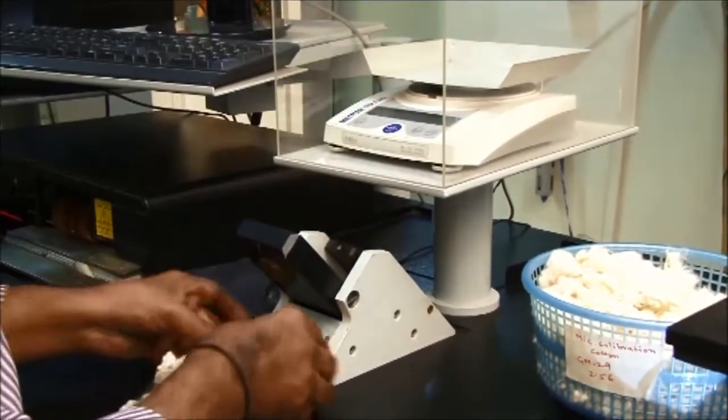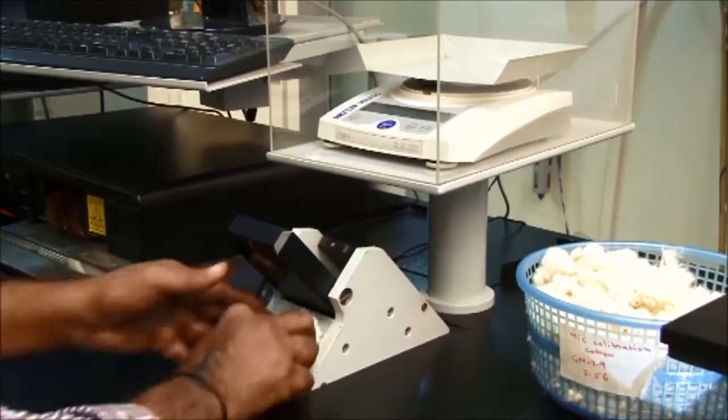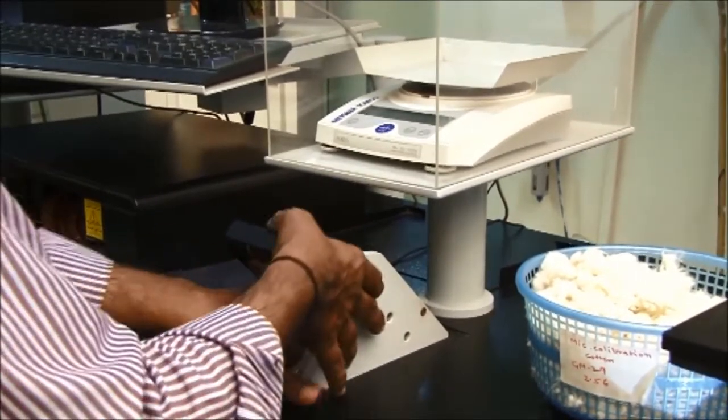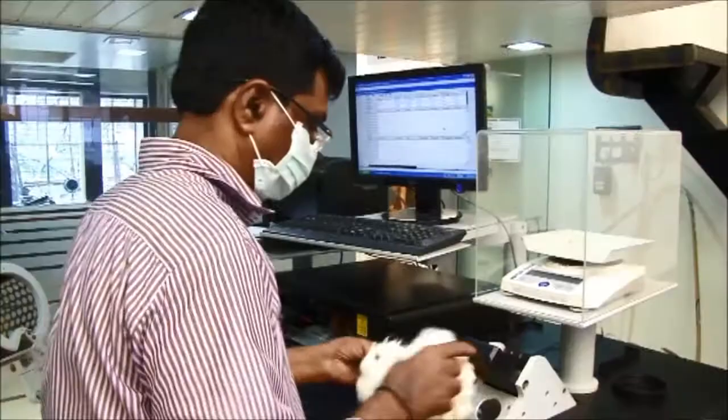Cotton samples must be brought to a moisture content with approved atmospheric conditions before and during testing. For cotton testing, the allowed temperature range is 21 degrees and the allowed relative humidity is 65%.